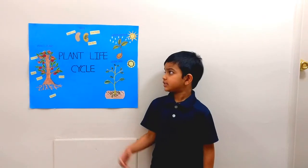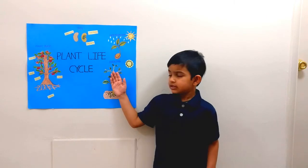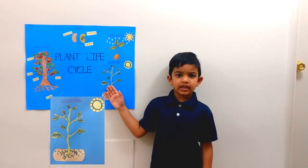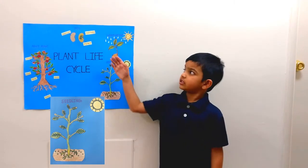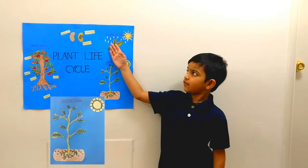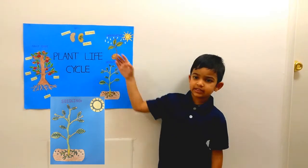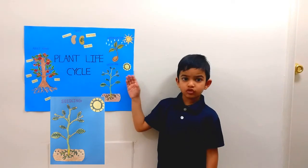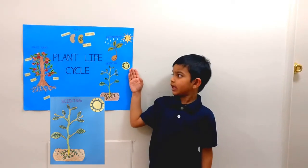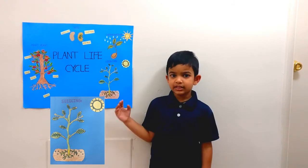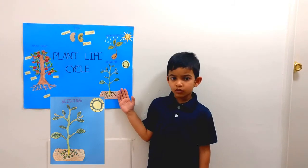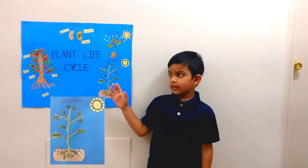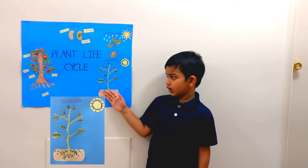The next stage is the Seedling. A seedling is a very young plant that grows after germination. The plant grows towards the sunlight because it makes its own food using sunlight and soil.